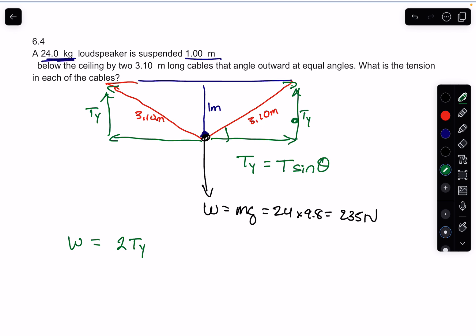So we can say this equals 2T sin θ, because the question is what is the tension in each of the cables. They're the same length, so you have the same tension. This is the solution.